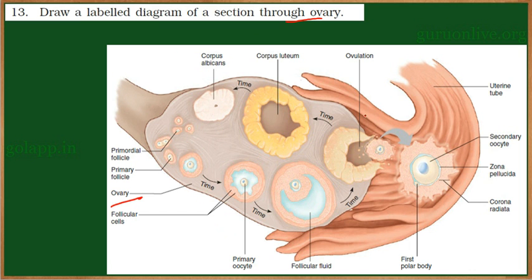This end is called the finger-like projection, referred to as fimbriae. It is a part of the fallopian tube, which is also called the oviduct.